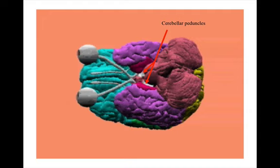Then the white areas you can see between the cerebellum and the hypothalamus are the cerebellar peduncles. These are axon bundles that carry information from the cortex to the cerebellum.